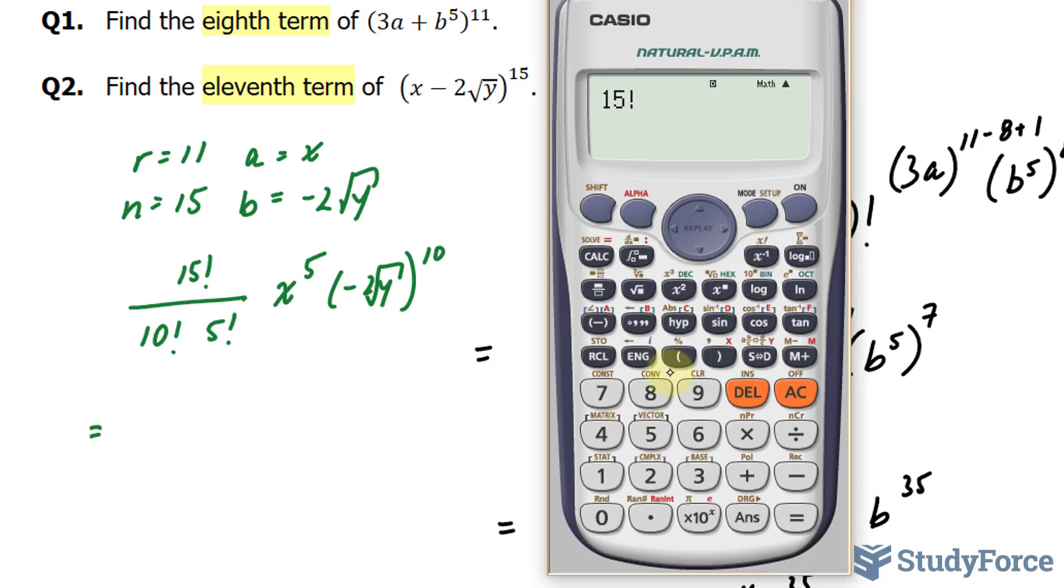15, and that's factorial divided by 10 factorial times 5 factorial. This gives us 3,003.